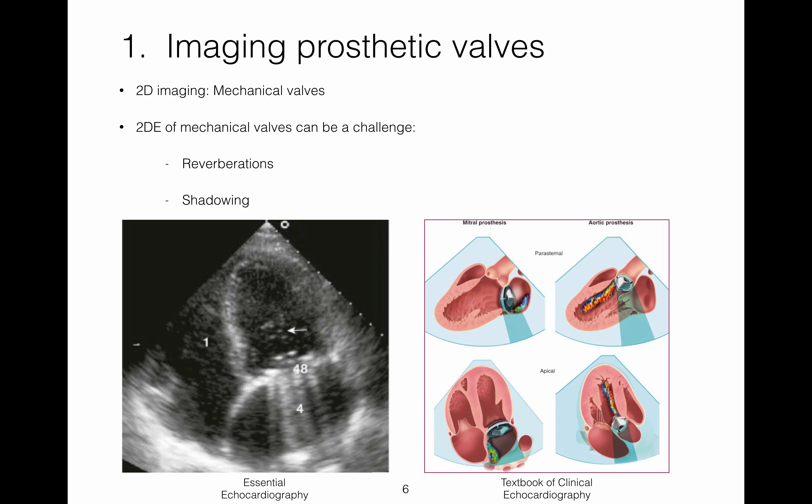2D imaging of mechanical valves can be a challenge due to the artefacts they often cause. The most common artefacts are shadowing, like the illustration on this slide, or reverberation, like the artefact seen on the 2D image on this slide.